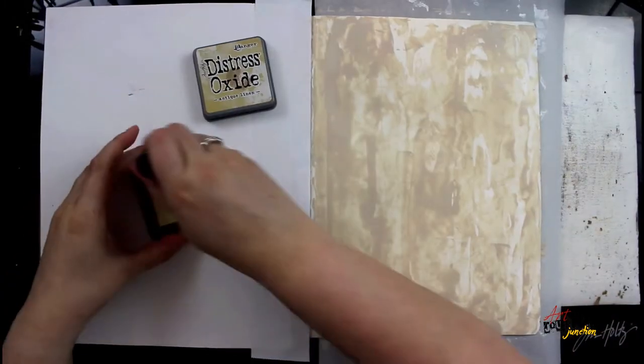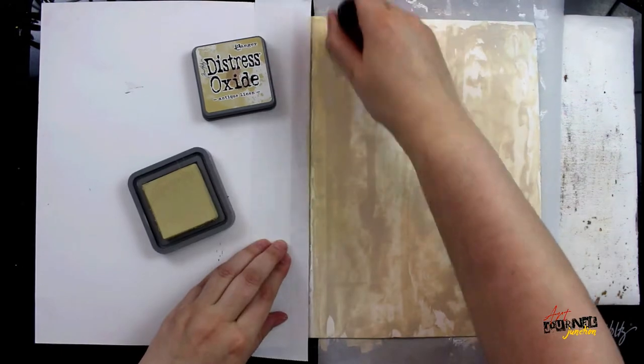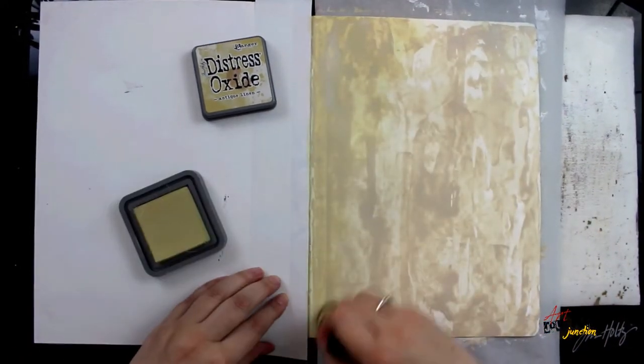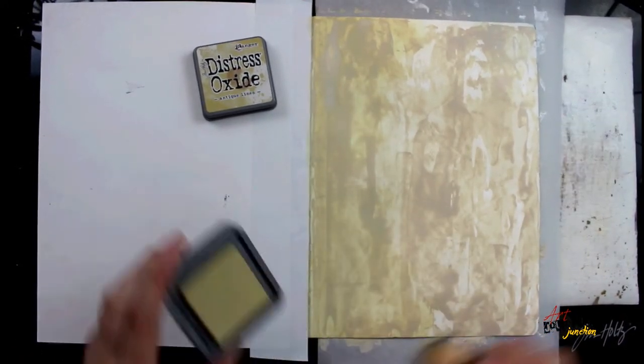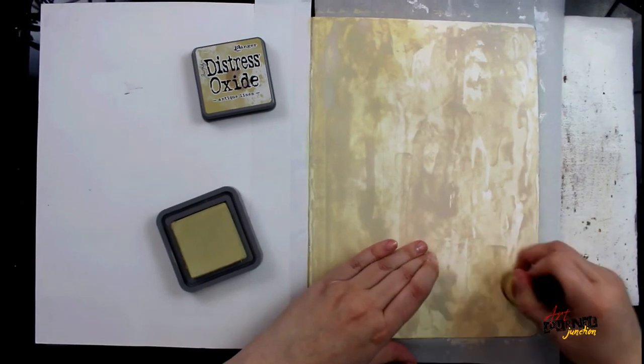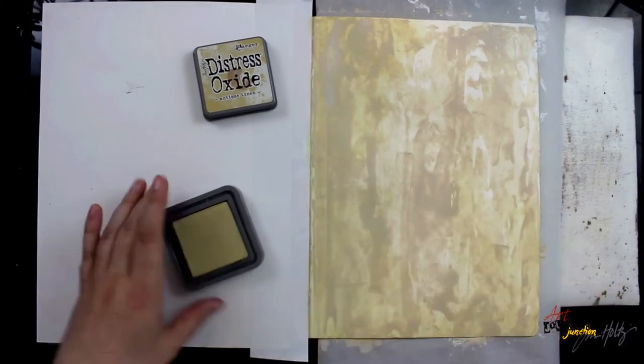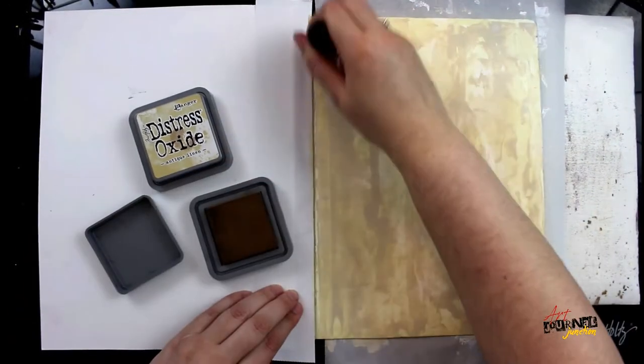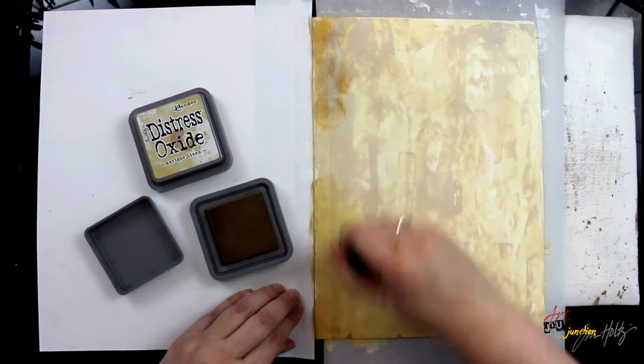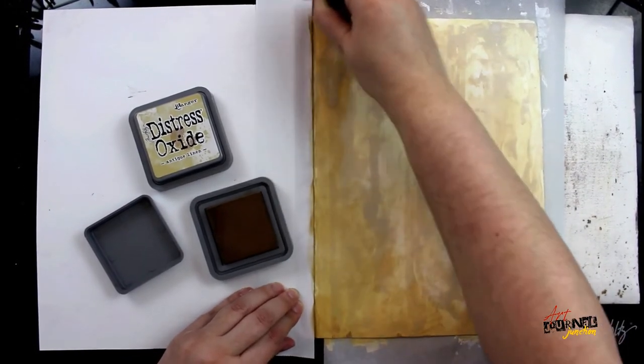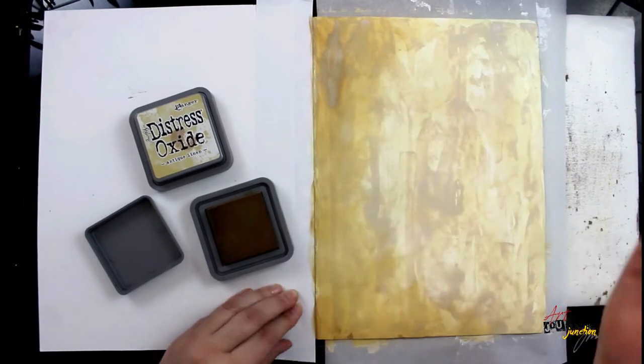After the paint has had a chance to dry, I'm going in with distress oxides, which are a really interesting ink. They're a hybrid of pigment and dye, so they're going to have nice coverage over my page, but also they're going to react with water and run and move.